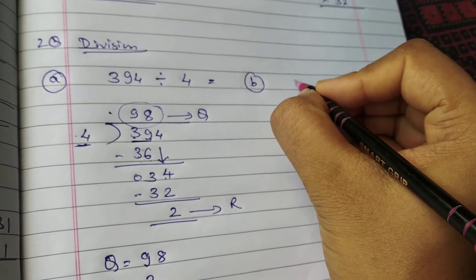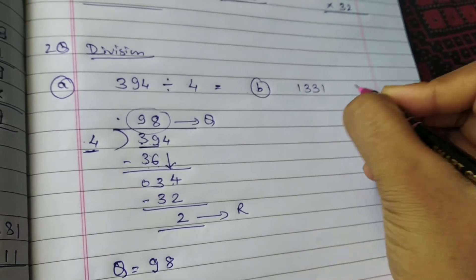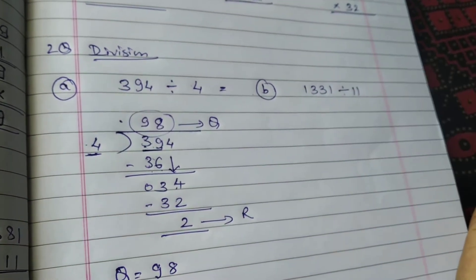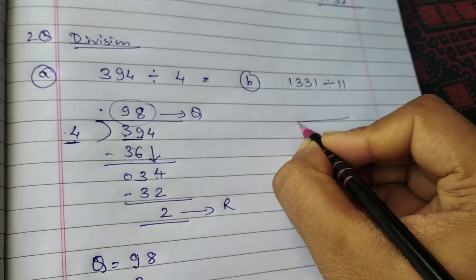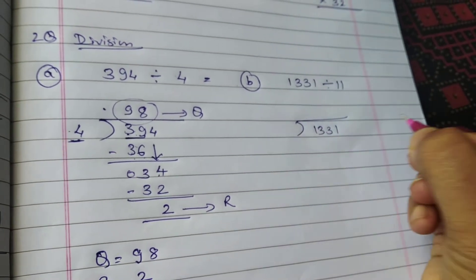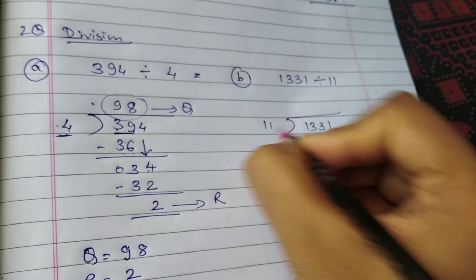Okay, now here 1331 divided by 11. Very simple. Okay, 2 digit number. So 1331 is your dividend, then it is your divisor.